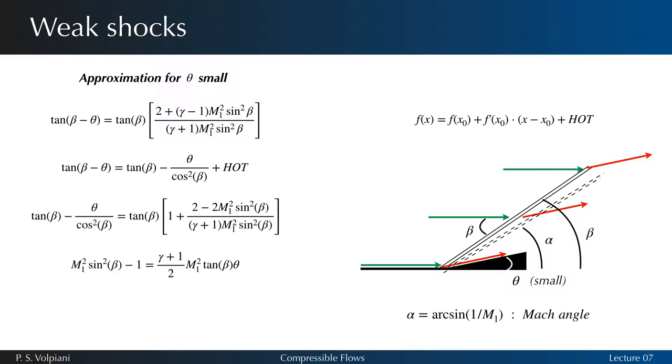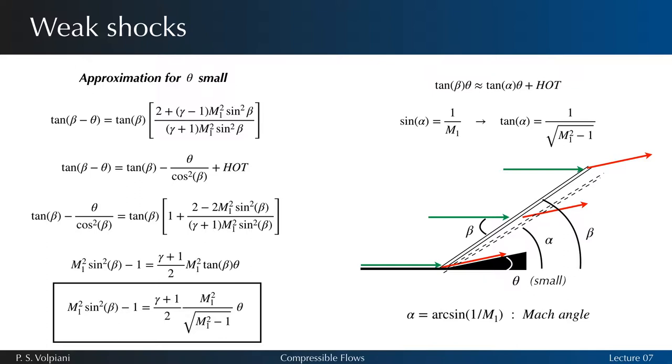After some manipulations, we obtain the following equation. Knowing that beta is very close to the Mach angle, we can write that tangent beta times theta equals tangent alpha times theta. It is also known that tangent alpha equals 1 over the square root of M1 square minus 1. Substituting the previous equation, we obtain the final expression.